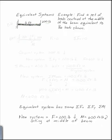Find a set of loads centered at the middle of the beam equivalent to the loads shown. We have a 200-pound load acting at the end of the beam that's 6 feet long, and we'd like to replace it with the same setup except with loads acting at the middle of the beam.